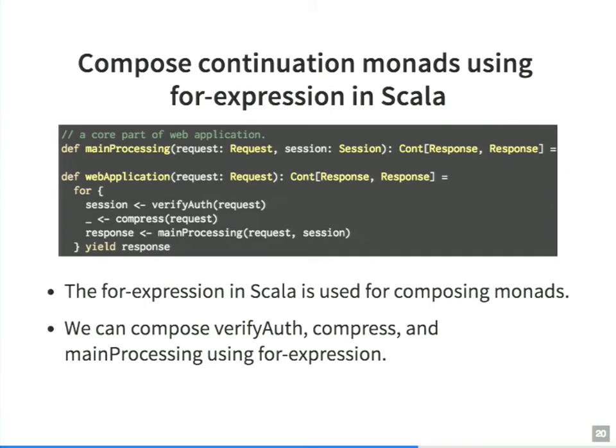Next, we construct these components using for-expression in Scala, which is used for combining monads. In this code, it assumes that the main-processing function is the core part of the web application. We can combine the verify-auth, compress, and main-processing functions using for-expression. In this way, it is easy to understand the interaction of parameters between components, and you can assemble various components flexibly.